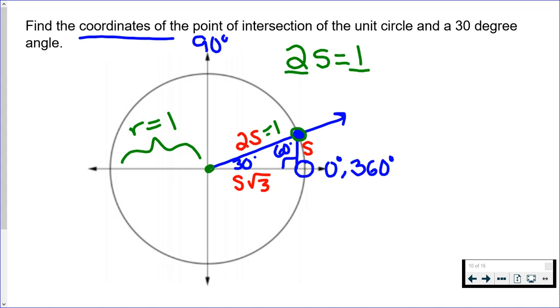So if I move the two over to the other side, I know that the side length s is one half. So now I have that shortest side, I know that it's equal to one half, which leaves me with s times the square root of three to figure out.